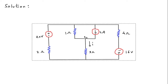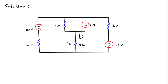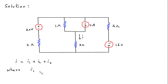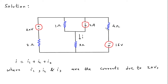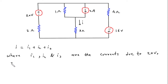First of all, we will redraw the circuit. Now let's say I is equal to I1 plus I2 plus I3. Since there are total three independent sources, we have taken I1 plus I2 plus I3, where I1, I2, and I3 are the currents due to 20V, 2 Ampere, and 16V respectively.